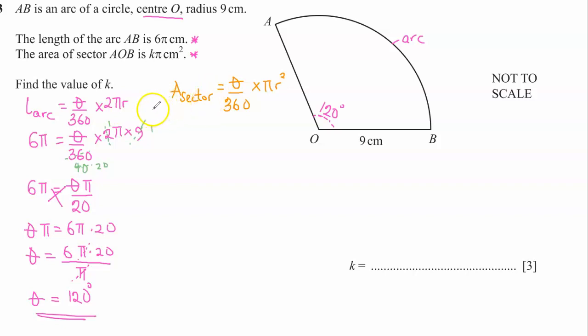Why is that the case? It is because the length of an arc is a fraction of the circumference, and the formula for the circumference is 2πr, while the area of the sector is a fraction of the area of a circle, and we know that the area of the circle is πr².